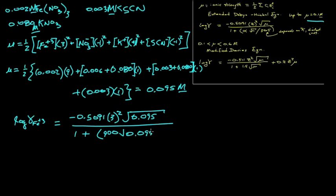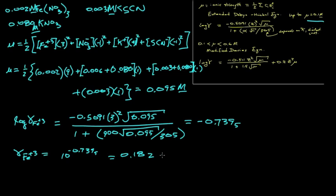900 picometers times the square root of the ionic strength, 0.095, and divided by 305. Numerically, that gives us a negative 0.7395. So the activity coefficient itself is the anti-log, or 10 to the minus 0.7395, or 0.182.